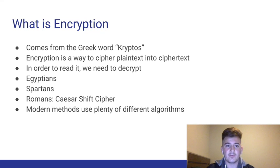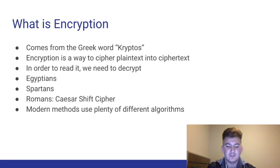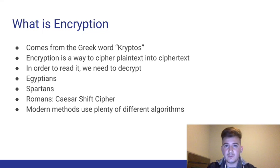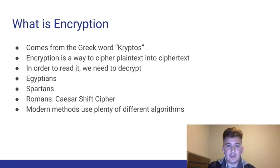Basically, encryption is a way to cipher plain text into cipher text. And in order to read it, we would have to do the opposite — we need to decrypt it. You have a message and you do something with it so that it no longer becomes readable by humans or computers. To decrypt it, you need a certain technique, a certain way, or a key of some sort to turn that unreadable message back into the original readable message.